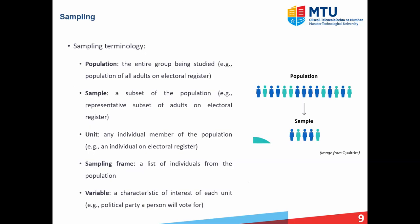Next, I'm going to introduce some key sampling terminology. Firstly, the population is the entire group being studied — for example, the population of all adults on the electoral register. A sample is a subset of that population, so in this case, a subset of adults on the electoral register. A unit is one individual from the population. A sampling frame is simply a list of all the individuals that make up the population. Finally, a variable is a characteristic of interest for each unit that varies depending on which person or unit you're dealing with — in this example, that could be the political party a person will vote for.